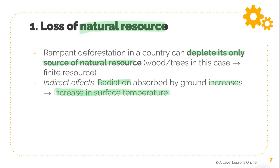Albedo refers to how much radiation is reflected. Soil can actually absorb more radiation, which leads to an overall increase in surface temperatures. This is an indirect effect on climate change. For those looking to write synoptic links, this can be an area for one: soil erosion and the loss of forest means there could be higher surface temperatures when more radiation is directly absorbed by the soil instead of by vegetation.